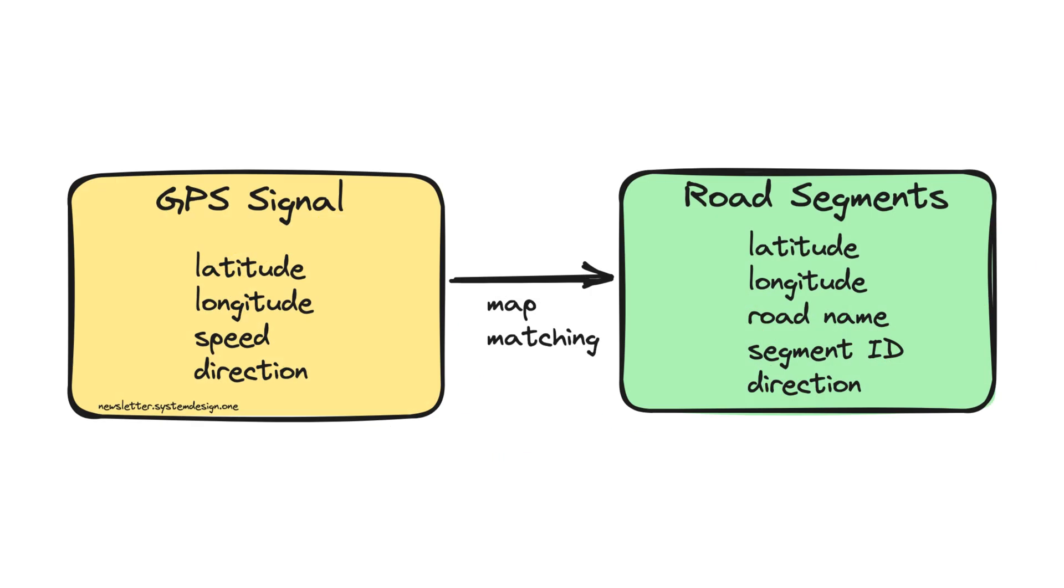So, they do map matching to find the best ETA. Map matching works by mapping raw GPS signals to actual road segments. They use the Kalman filter for map matching. It takes GPS signals and matches them to road segments. Imagine the Kalman filter as a person who makes a correct guess about something's location. The new and old information is taken into consideration for guessing.